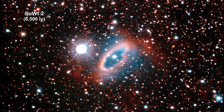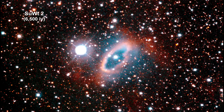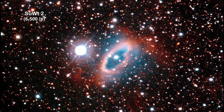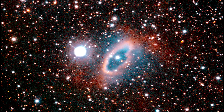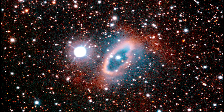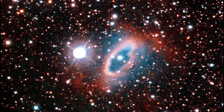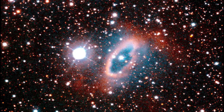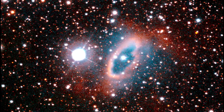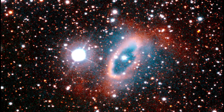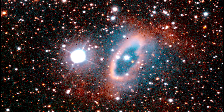SUWT 2's central star is actually a close binary system where two stars completely circle each other every five days. The interaction of these stars and the more massive star that sheds material to create the nebula formed the ring structure. The burned-out core of the massive companion has yet to be found inside the nebula.